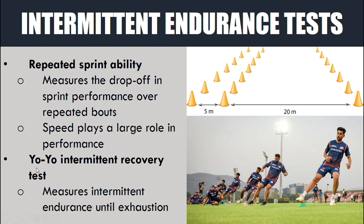We then have the Yo-Yo intermittent recovery test, which is quite similar to the beep test, however the difference is that it's intermittent rather than continuous. As shown in this diagram, the athlete starts at the cones, runs up and back in time with the tape recording, then gets a break — walking five meters up and five meters back — and continues that as the speed gets faster, until exhaustion. This gives a really good blend of aerobic recovery ability and high intensity activity without actually having to maximally sprint.